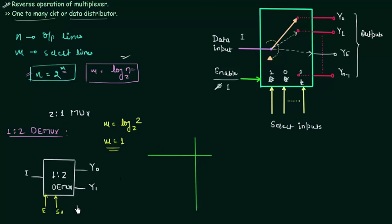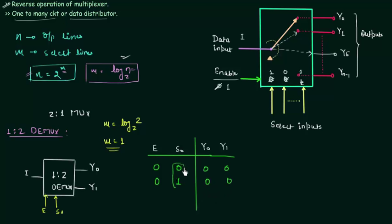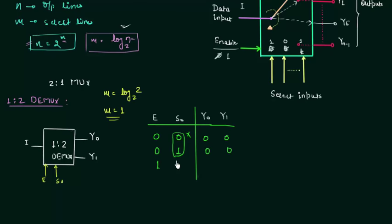e and S0 will decide the two outputs y0 and y1. When e is 0 and S0 is 0, the outputs are going to be 0 0, because the demux is not operational. In the same way when e is 0 and S0 is 1, both outputs are also equal to 0. So we can say that when e is 0, S0 is don't care — if e is 0, outputs are going to be 0. Now when e is 1, demux is operational and S0 is 0, it means the data input i is transferred to y0.